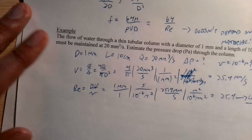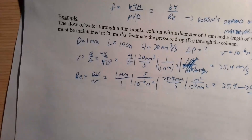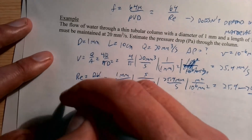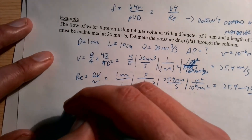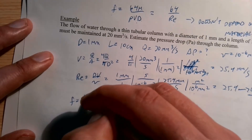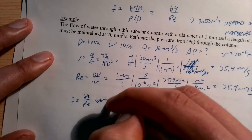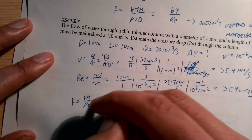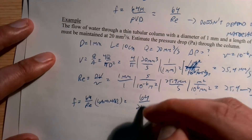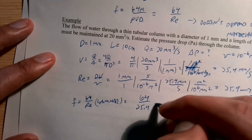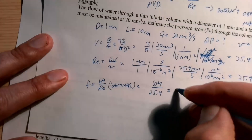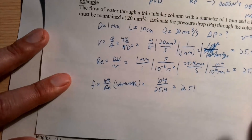Since we're in laminar flow, the friction factor is f = 64/Re = 64/25.4 = 2.51.